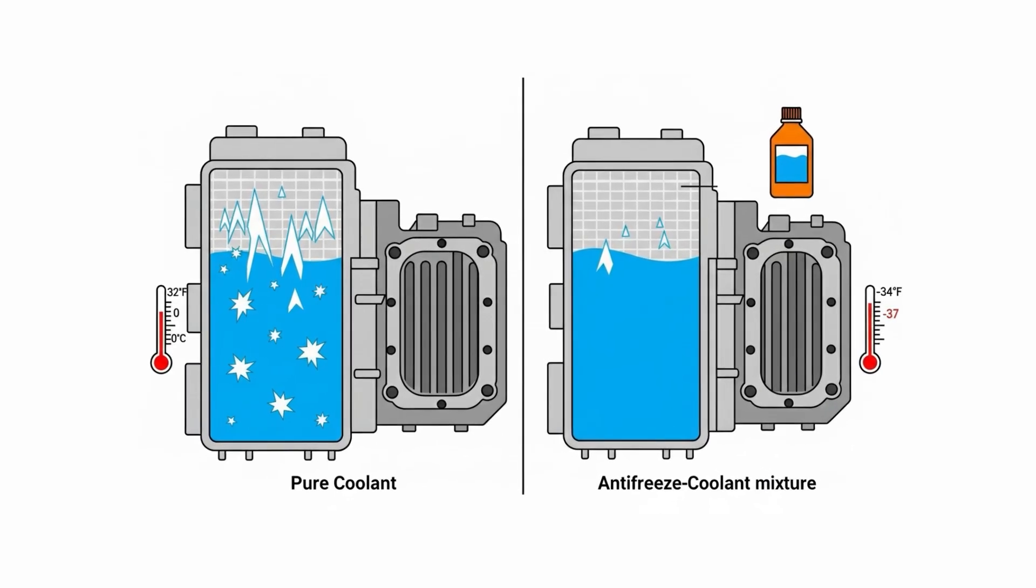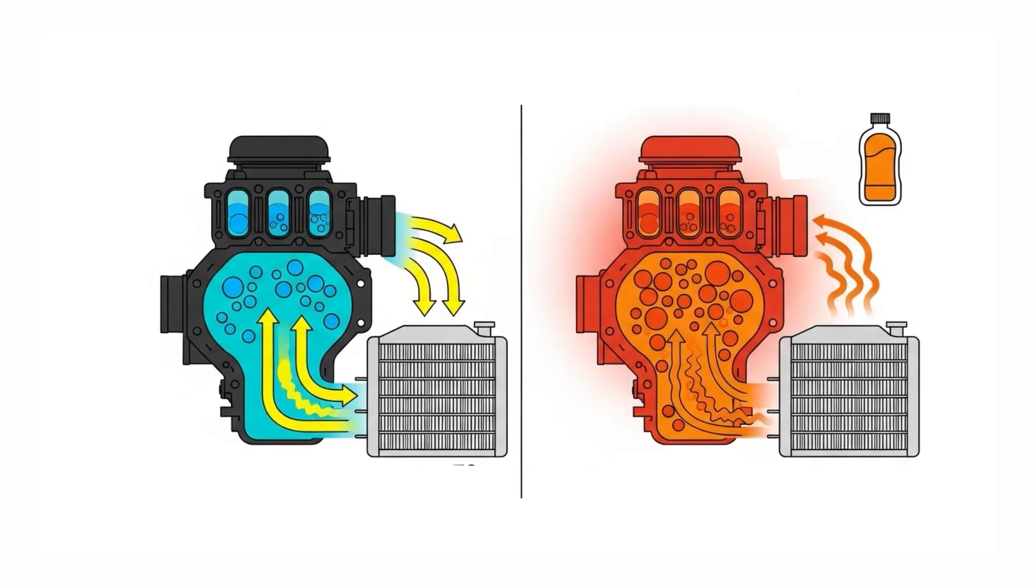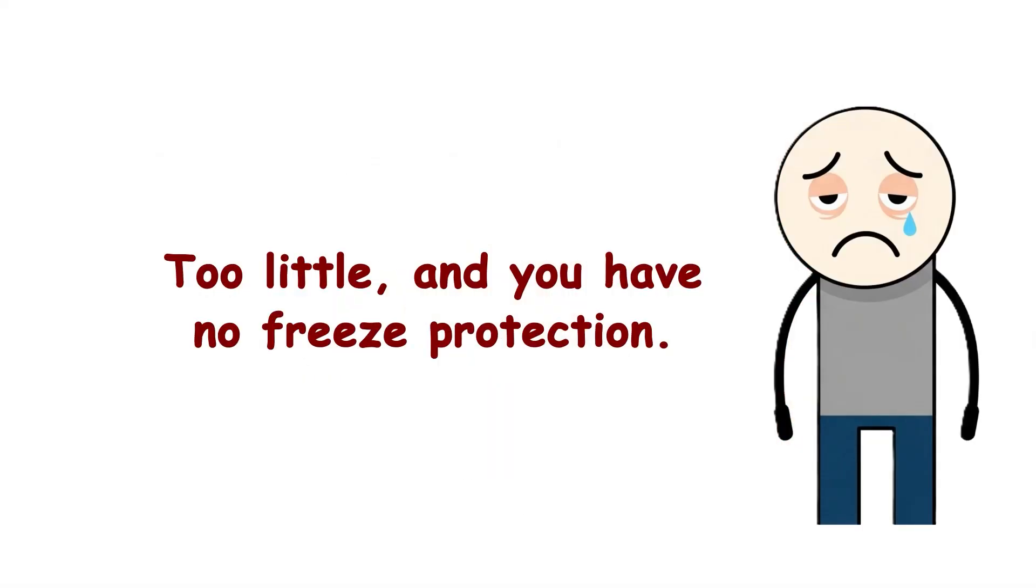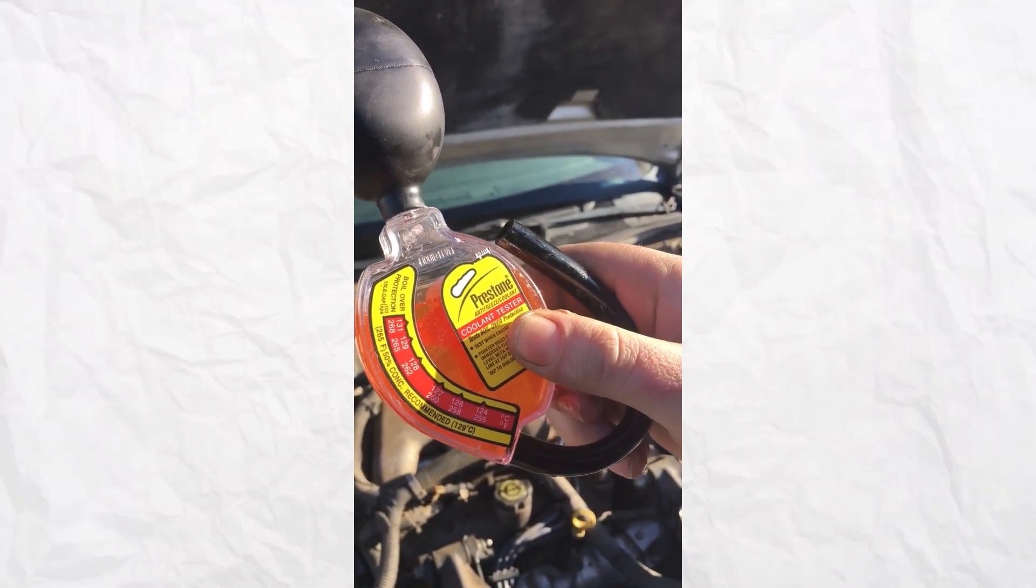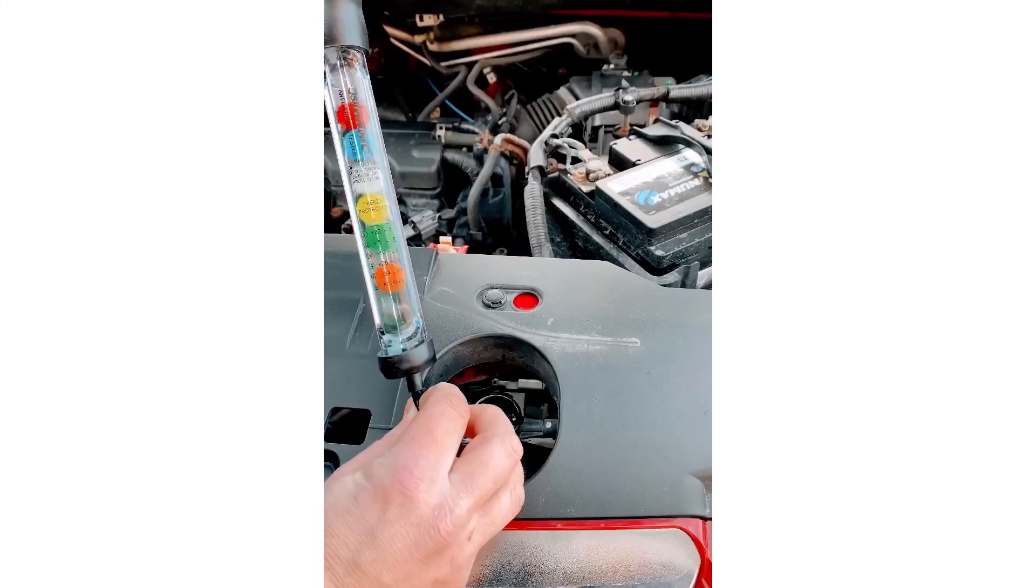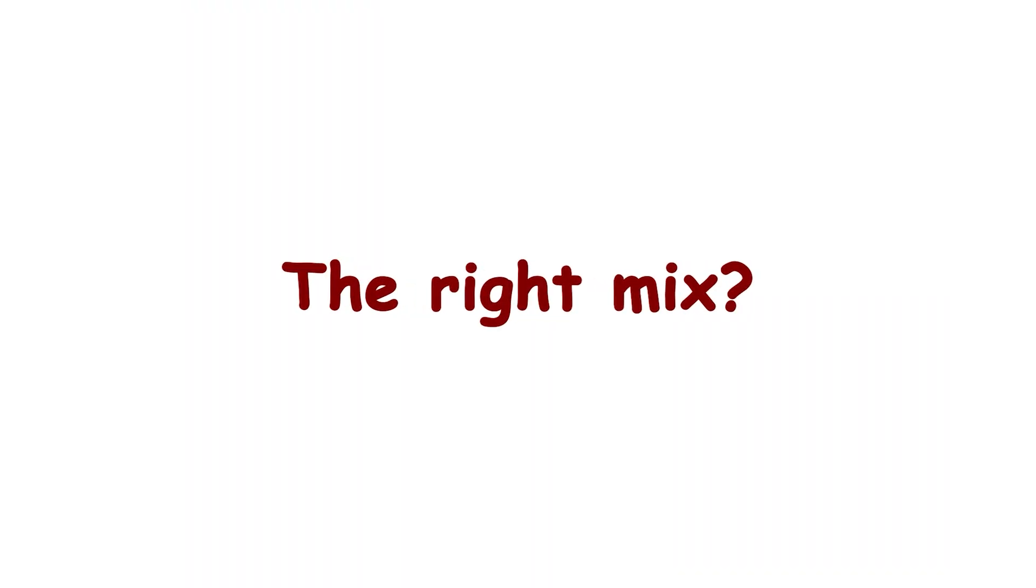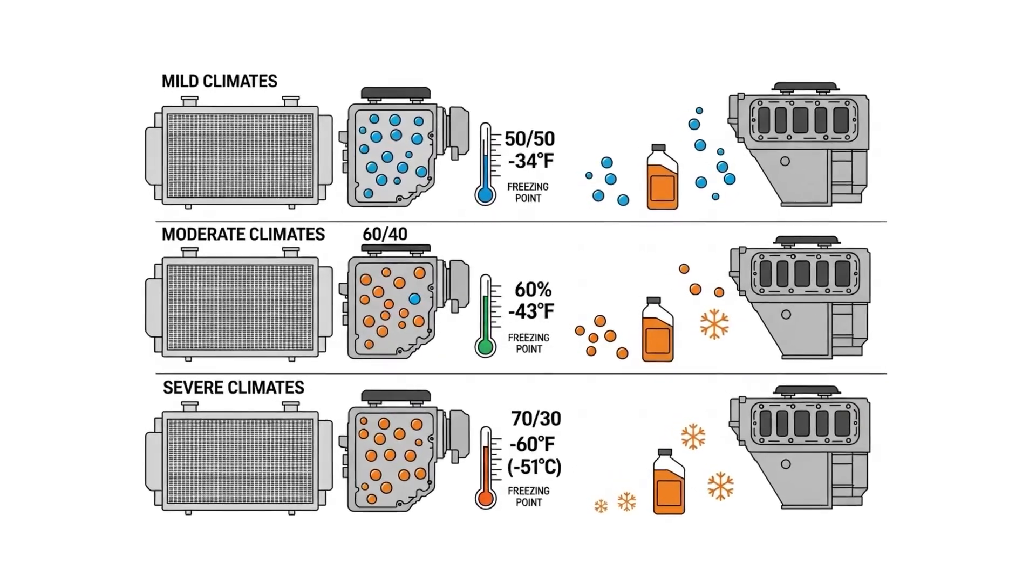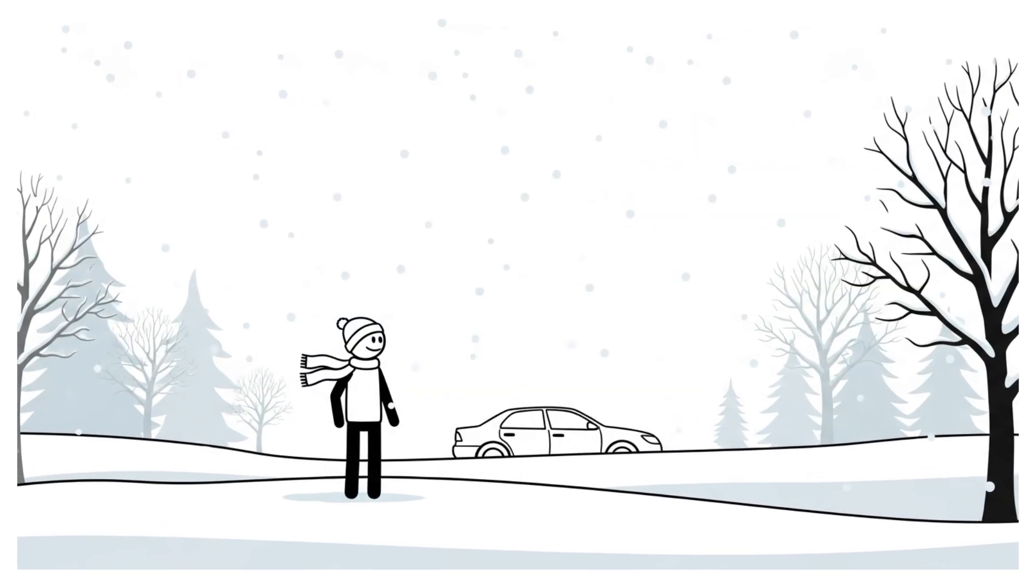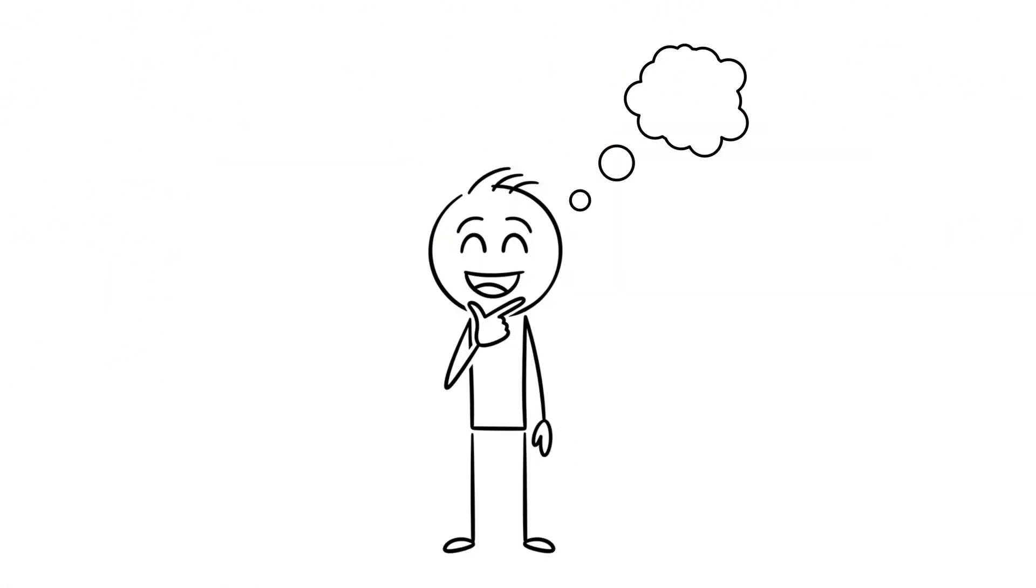The science is simple. Antifreeze works by lowering the freezing point of your coolant, but too much antifreeze actually reduces your system's ability to transfer heat. Too little, and you have no freeze protection. Professional diesel techs always test the coolant with a hydrometer and test strips to check both freeze protection and the health of corrosion inhibitors. The right mix? Usually 50-50 to 70-30 antifreeze to water, depending on how cold it gets in your area. But get it wrong, and you risk both overheating and catastrophic freeze damage.